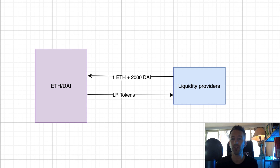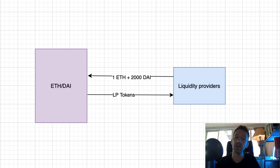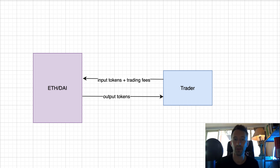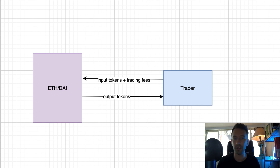When you are a liquidity provider, to make money you just send your tokens to a decentralized exchange, wait a bit, and later withdraw your initial capital plus some profit — very easy. When you send your tokens as a liquidity provider, you have to provide the same value in both assets of the pair. For example, on the ETH/DAI pair at a price of 2,000 DAI per ETH, you could provide one ETH and 2,000 DAI and receive LP tokens. You can redeem these LP tokens at any time for your initial capital plus trading fees.